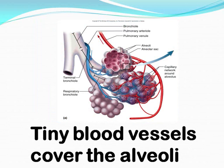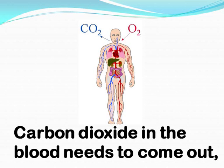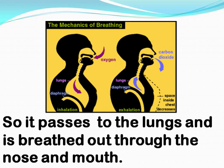Tiny blood vessels cover the alveoli. They absorb oxygen from the air and send it around your body. Carbon dioxide in the blood needs to come out, so it passes to the lungs and is breathed out.